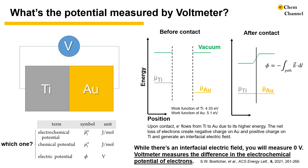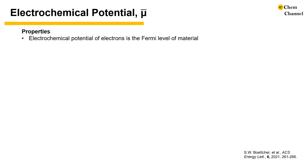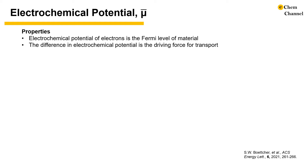Yet, if we measure the voltage across the two metals using a voltmeter, we get zero volts. What the voltmeter measures is the difference in the electrochemical potential of electrons. As we showed in the previous schematic, the electrochemical potential of electrons is also the Fermi level of a material. The difference in the electrochemical potential is the driving force for transport. In the previous case, it drove the transport of electrons.